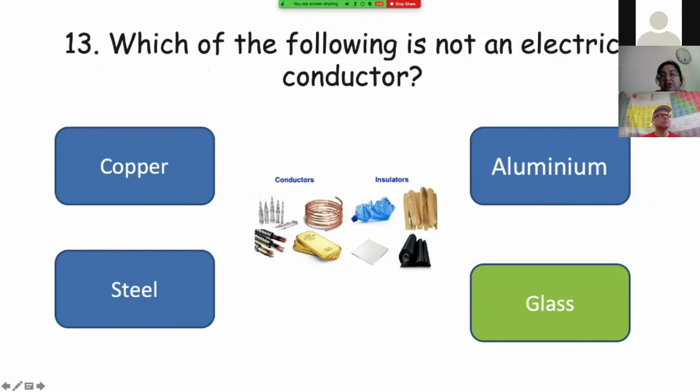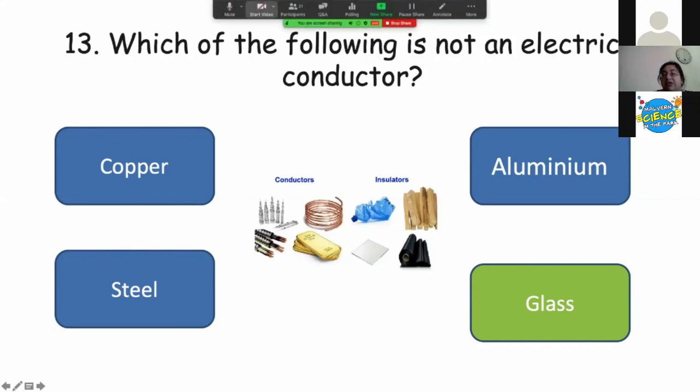And conductor. Conductor copper can pass electricity. Aluminum can pass electricity. Steel can pass electricity. The only thing that is not an electrical conductor is glass here.